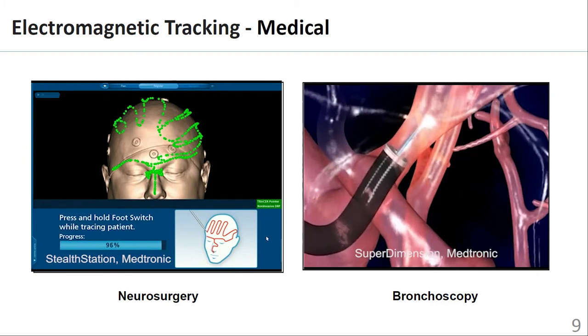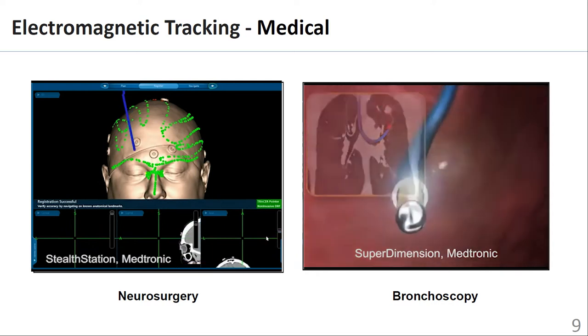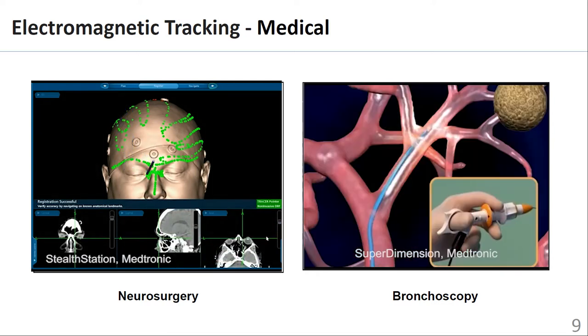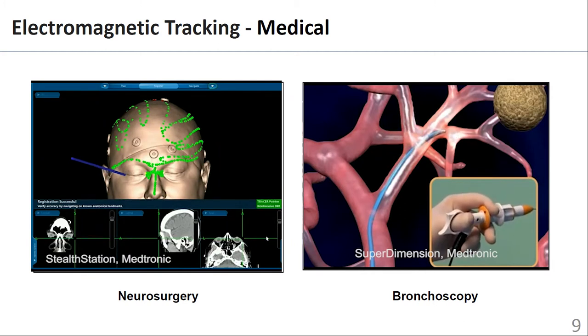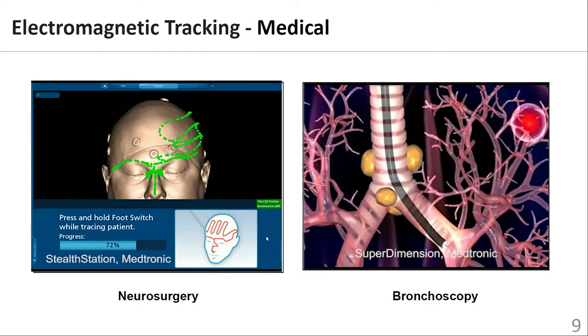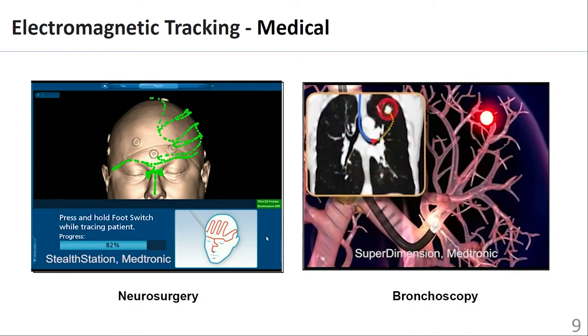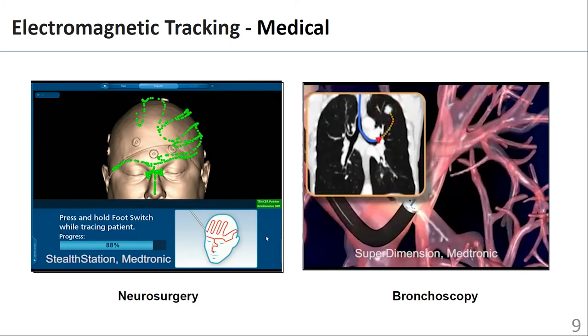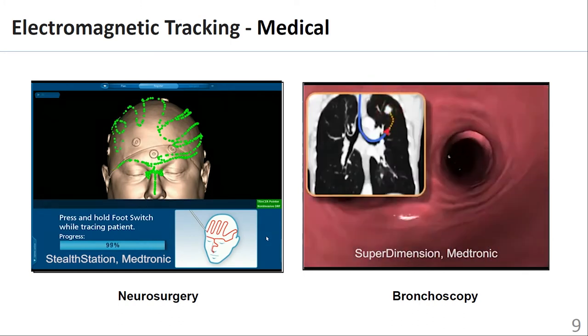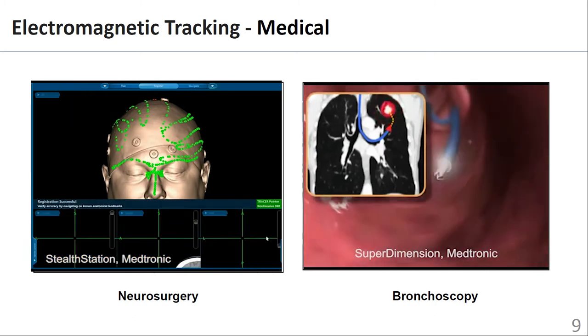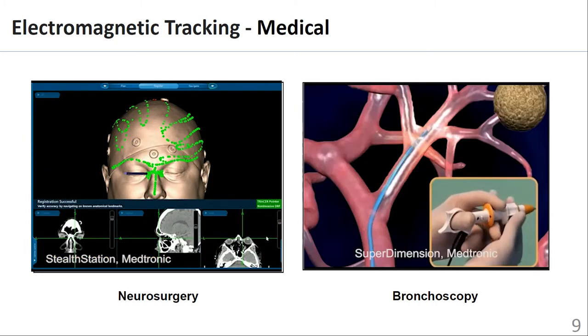Electromagnetic tracking enables medical instruments to be tracked beyond a clinician's line of sight. This is particularly useful in endoscopic procedures such as bronchoscopy where deep airway navigation is performed using the limited sight of an endoscopic camera in combination with x-ray imaging. Commercial lung navigation systems such as the Medtronic superdimension system aim to simplify airway navigation and reduce x-ray exposure by using electromagnetic tracking as an alternative.